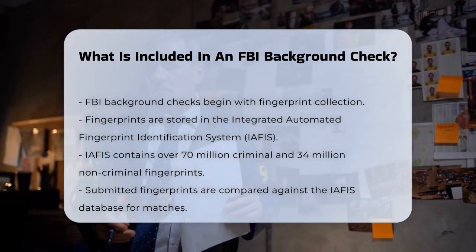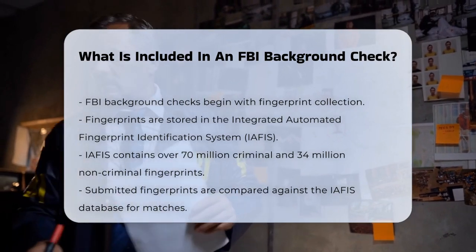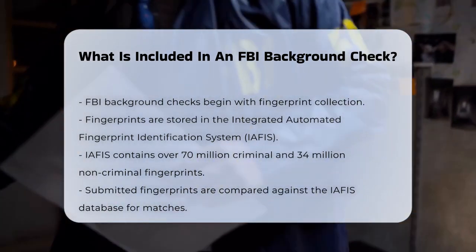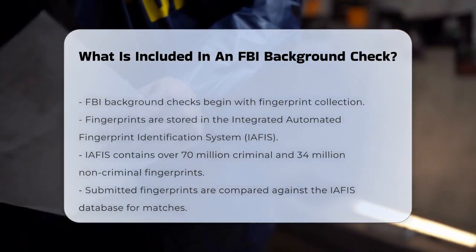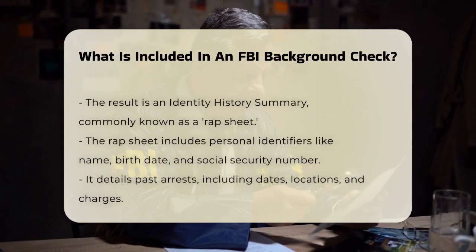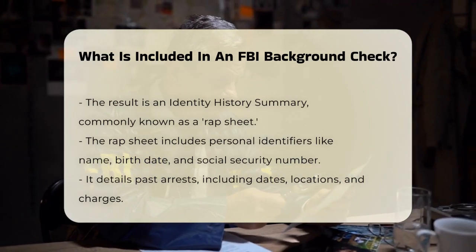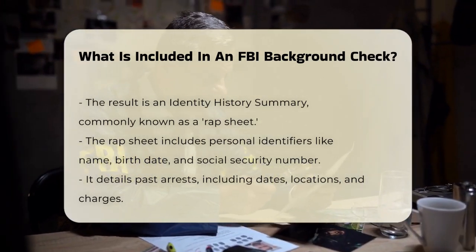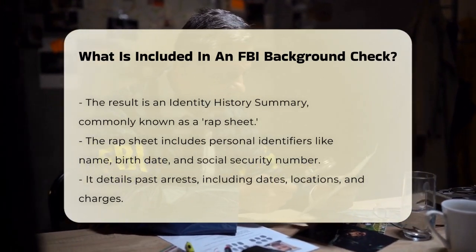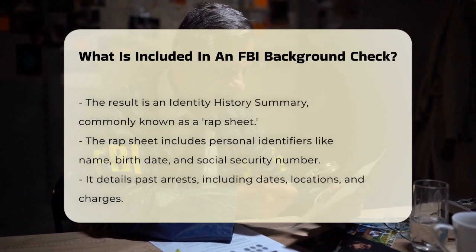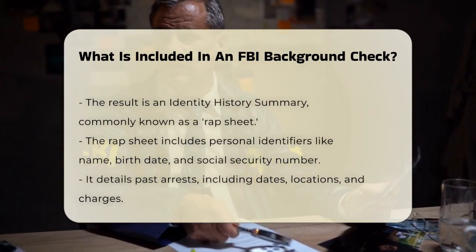This process provides a comprehensive report known as an Identity History Summary, or a rap sheet, which includes your personal identifiers like name, birth date, and social security number, along with detailed information about your criminal history.